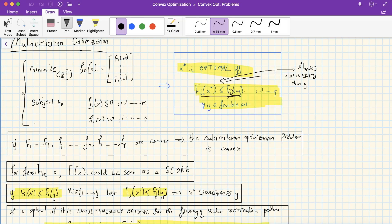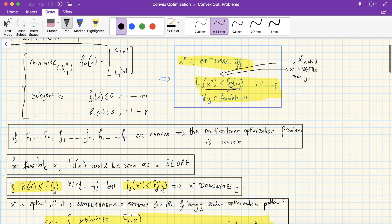We can also interpret uppercase F1 down to uppercase Fq as scores. So we're trying to jointly optimize the scores. We also gave another interpretation of optimal points x star.